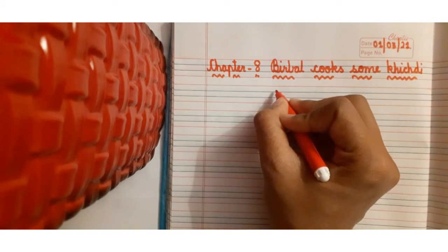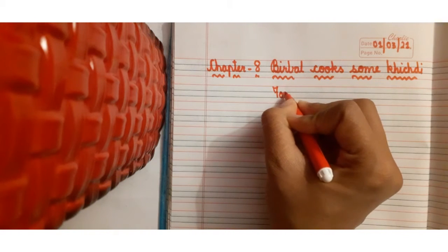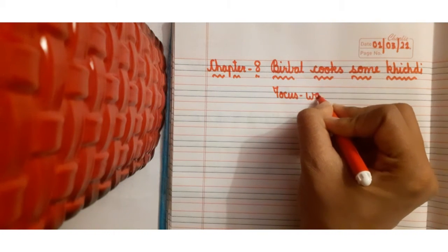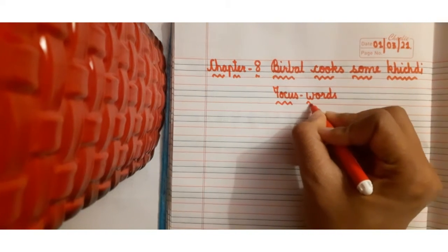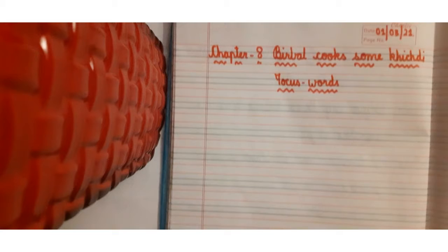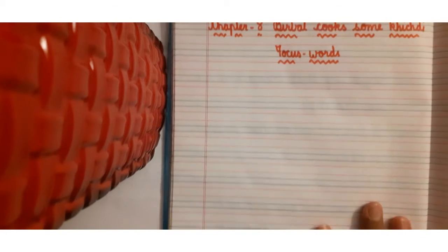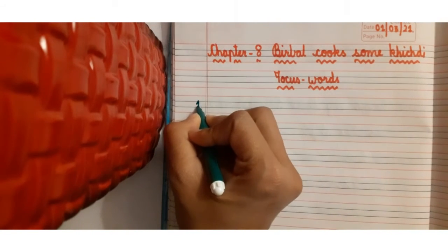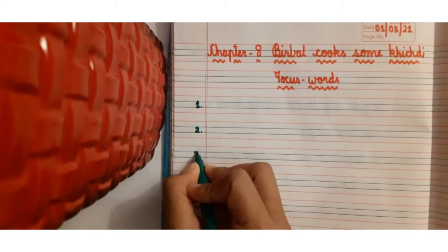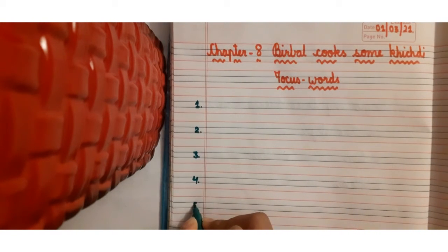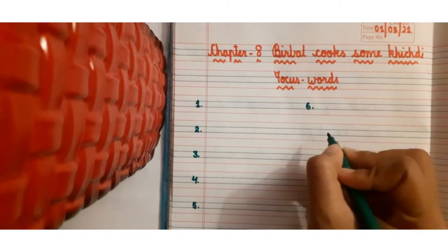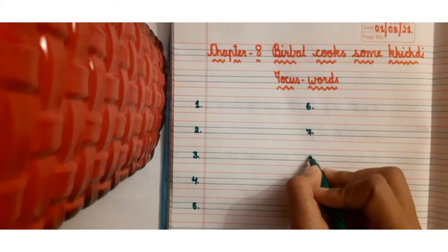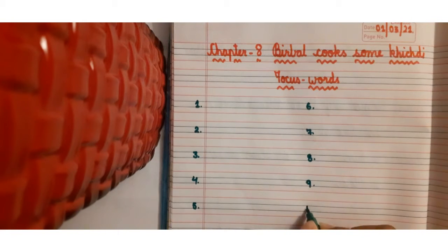In next line write focus words. Put numbering one, two, three, four, five, six, seven, eight, nine, and ten.